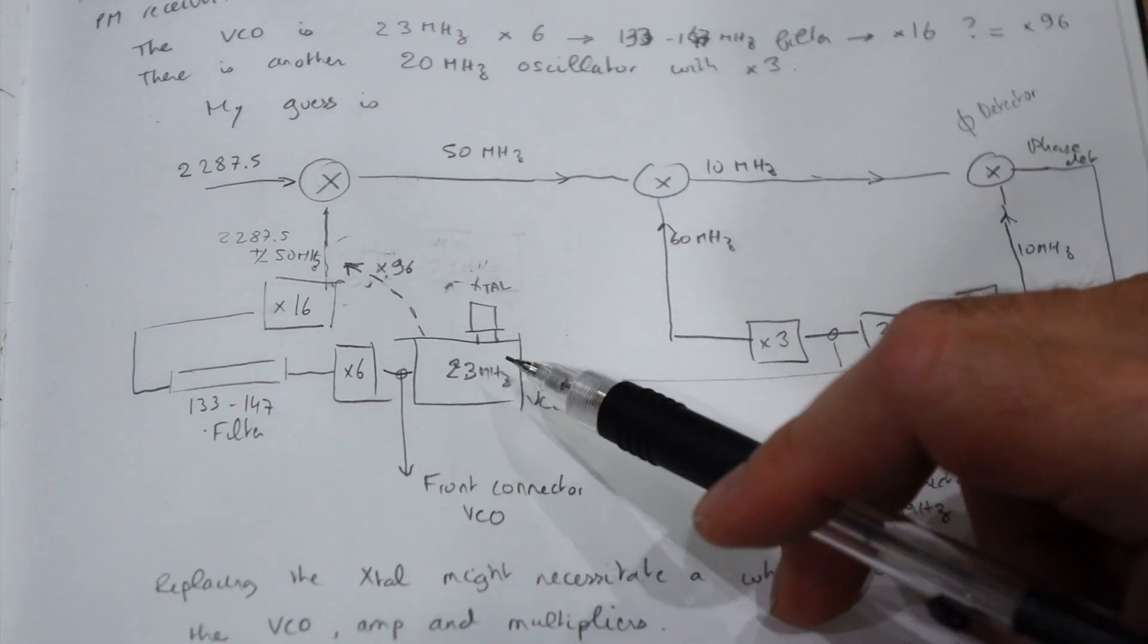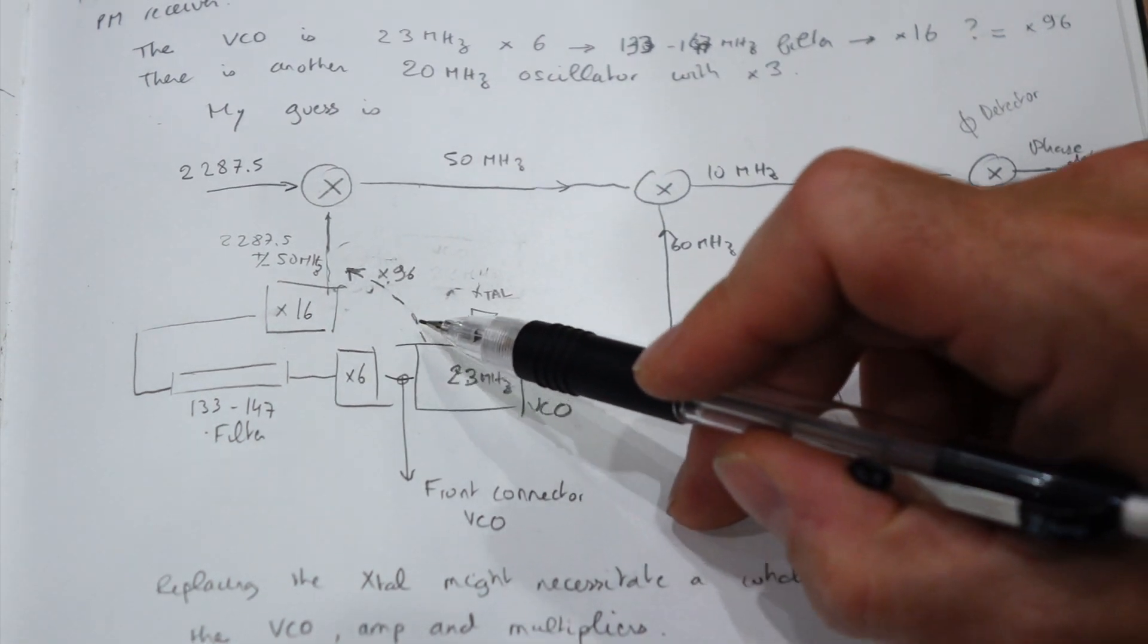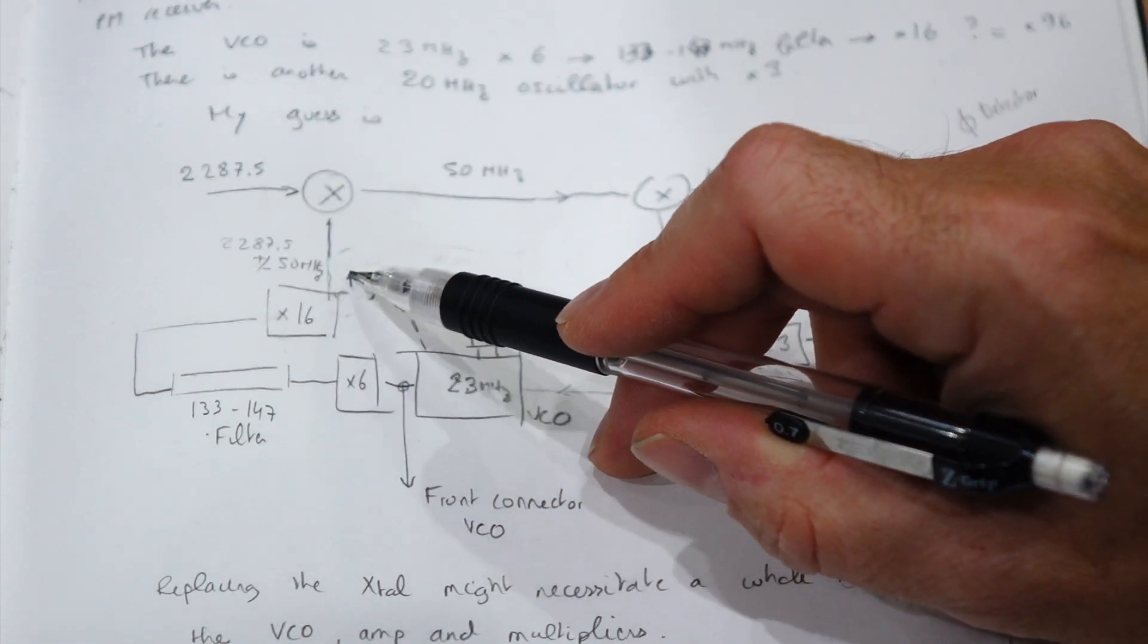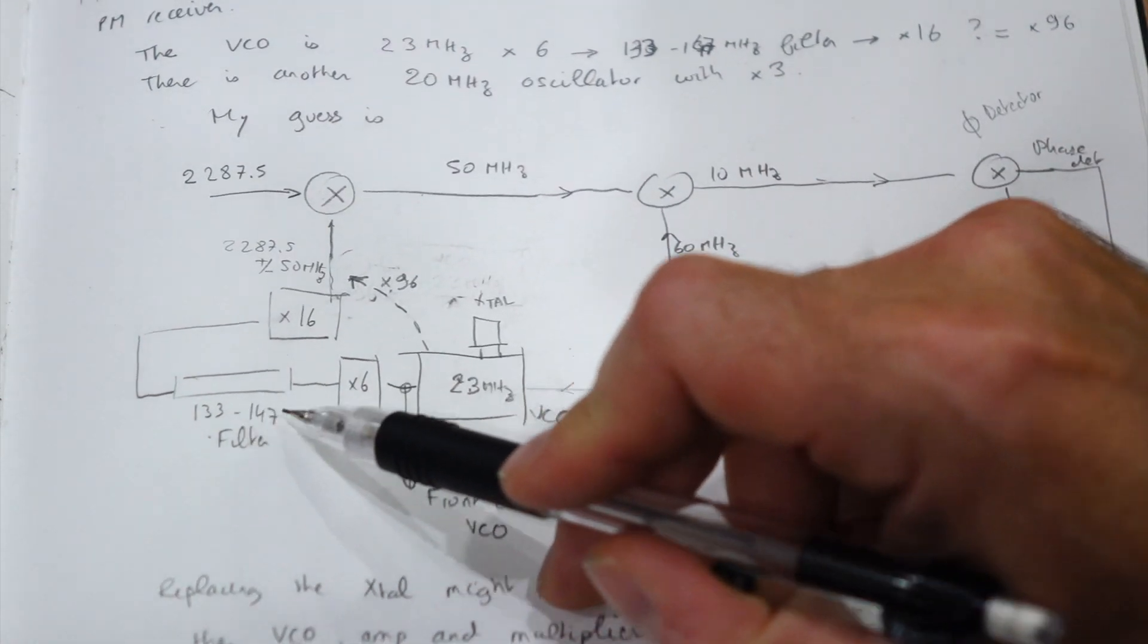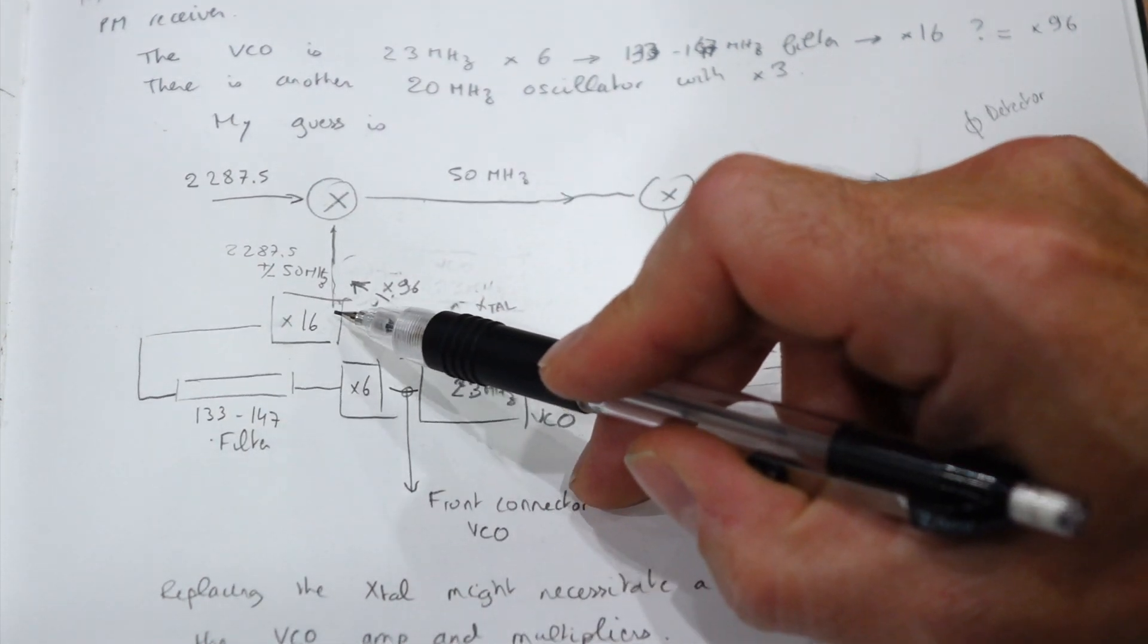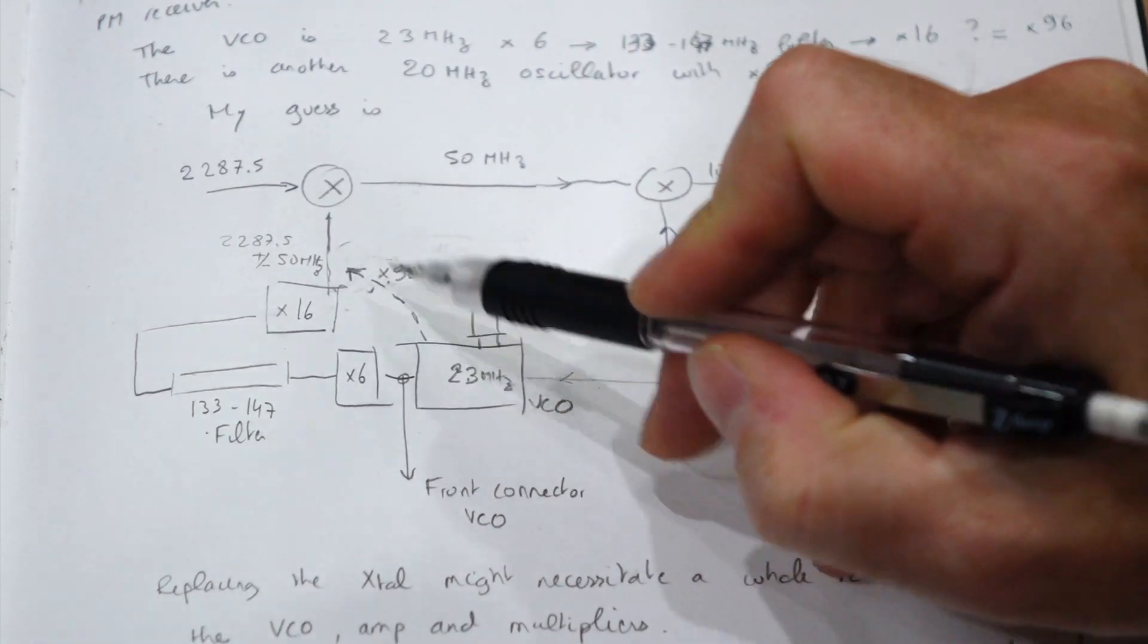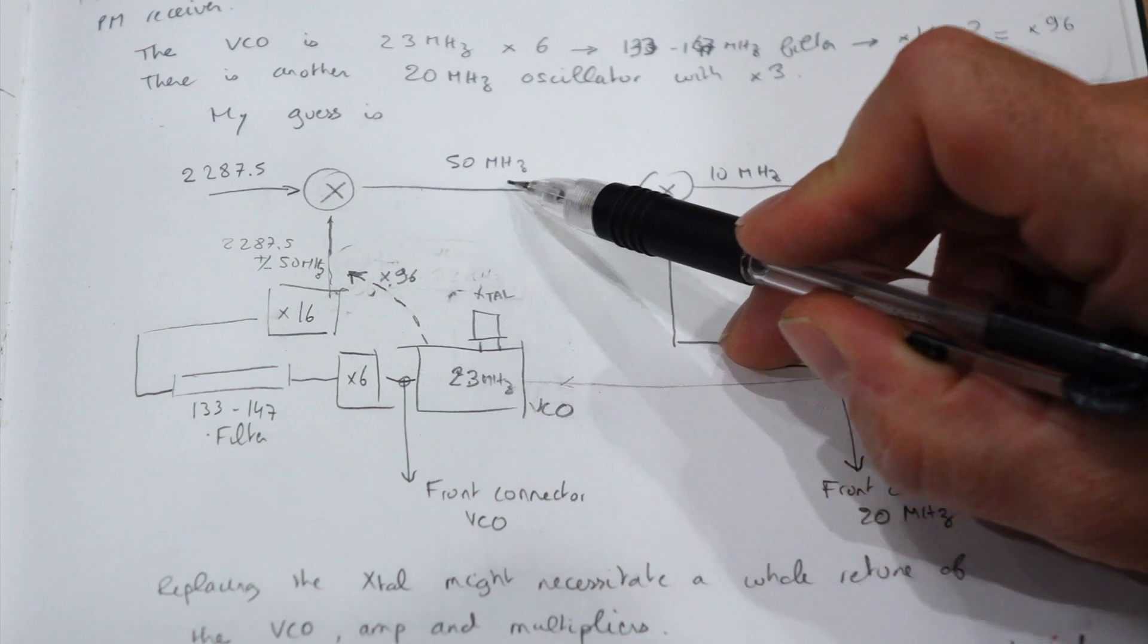The first one is the one we found in the last episode. It's at 23 MHz. It gets multiplied by 96, but now we know that it gets multiplied by 6, goes into the 133 147 MHz filter, and then is multiplied by 16, but it's the same result. The difference between those two frequencies is 50 MHz. So here we go, our first conversion.